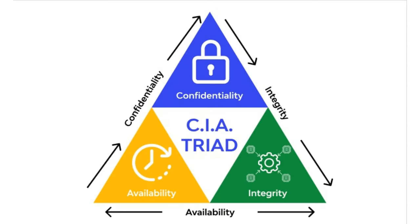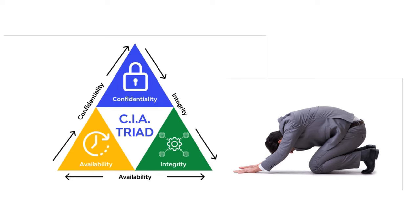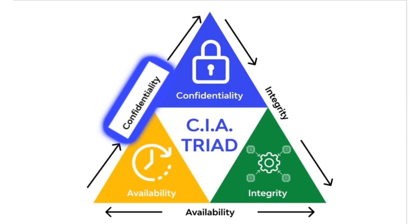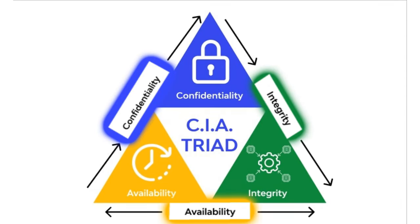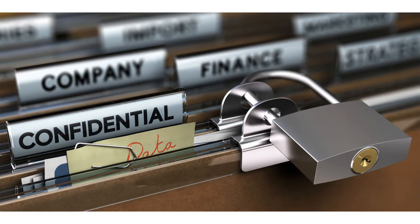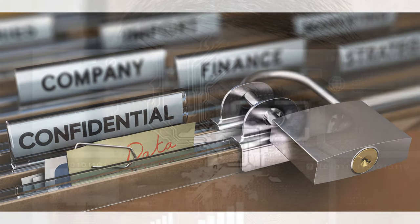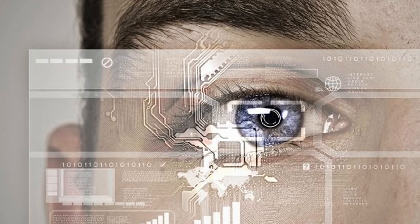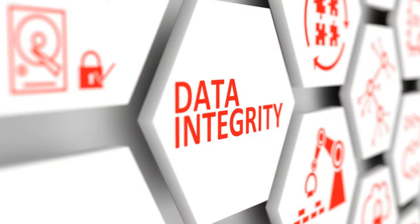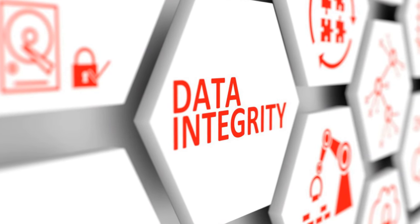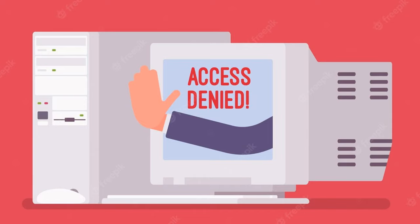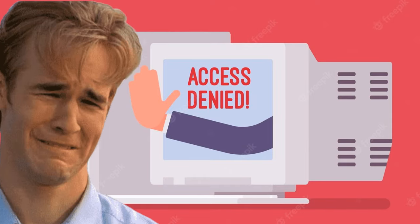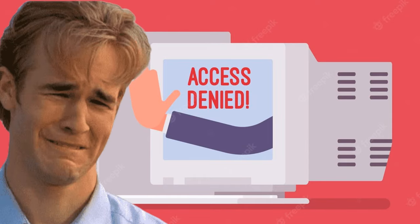Explain the CIA triad. This is the alma mater of security professionals: confidentiality, integrity, availability. Be sure to explain them slightly. Confidentiality has to do with keeping an organization's data private — only authorized users and processes should be able to access it. Integrity means the data can be trusted and has not been altered. And availability is whether people can access the information they need to access.